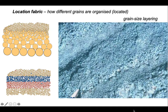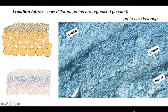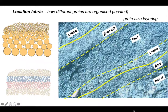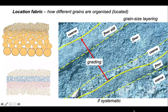Let's start off looking at grain size layering. This is a location fabric defined by variations in the size of grains in a rock, and we can identify layers of coarse material, finer material, and finer still. We can pick out the boundaries between these layers and define the variations — essentially defining a grading through coarse to finer still in the outcrop.